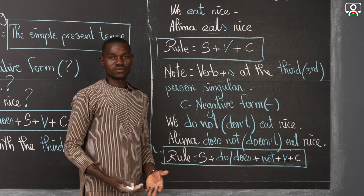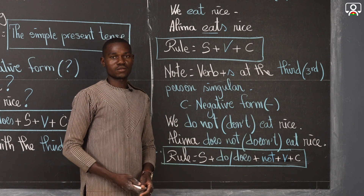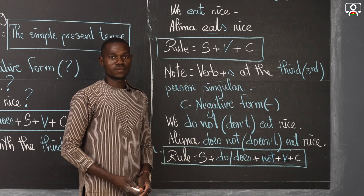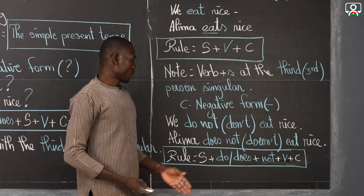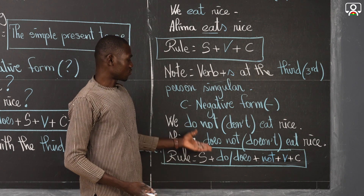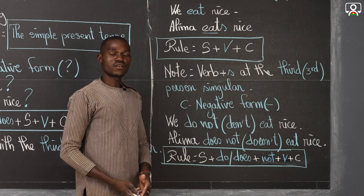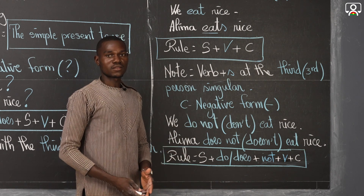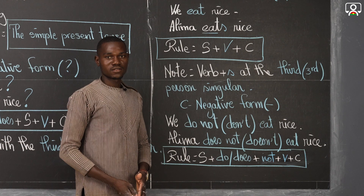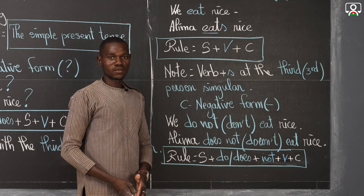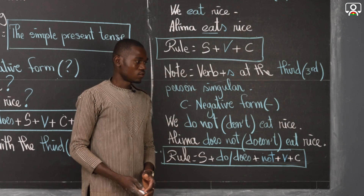So, the contracted form for do not is don't, and the contracted form for does not is doesn't. You can use do not or don't, and you can use does not or doesn't. Great, so this is the end of our lesson.